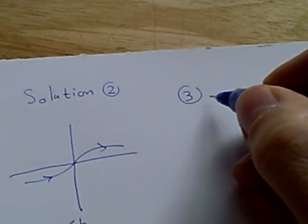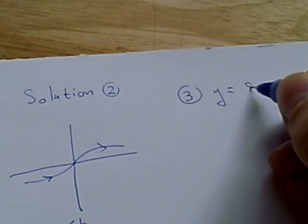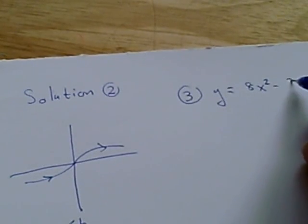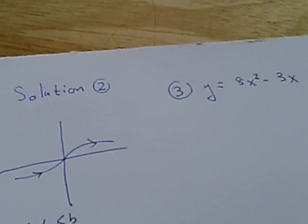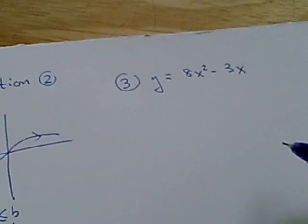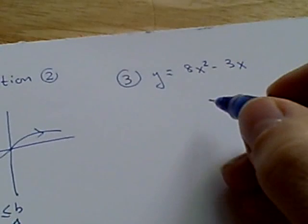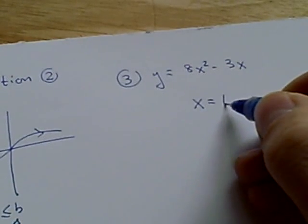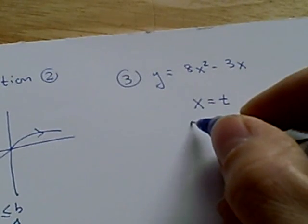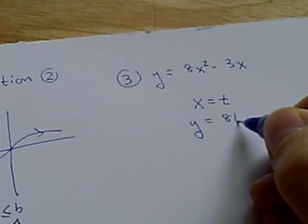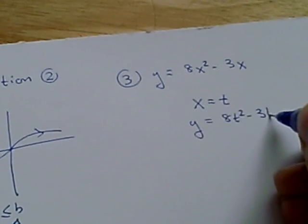So number 3 presents you with an equation, y = 8x² - 3x. Now, you're asked to write a parametric equation for this. And the one very easy way to do that is to say that x = t and then y = 8t² - 3t.